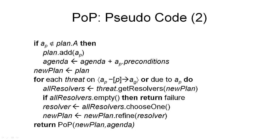So far we have added causal links and variable bindings to our partial plan. The next component to modify is the set of actions, and this depends on whether our chosen provider AP was already an action in the plan or a new operator instance. If it is a new instance of an operator not already in the plan, we add that new action to the plan and also add to the agenda all its preconditions as unachieved sub-goals. If the chosen provider was already part of the plan, we don't need to modify the set of actions. In the next step, we generate a copy of our plan to modify in the loop that follows, as introducing new actions or causal links may introduce new threads.